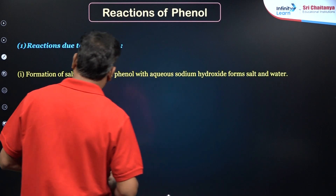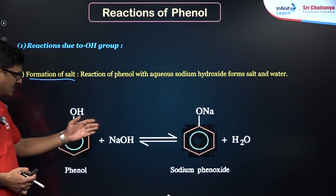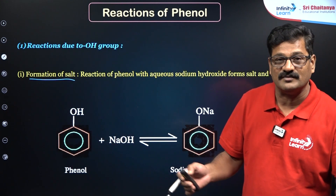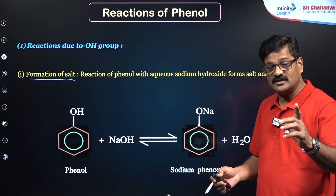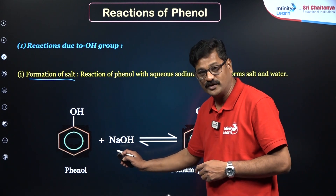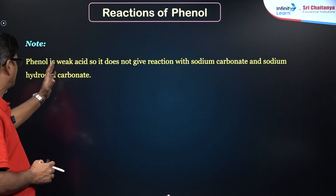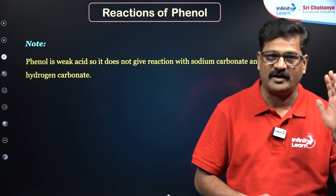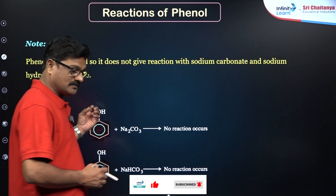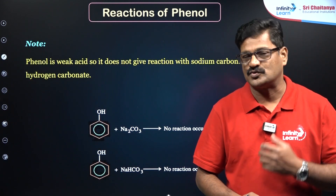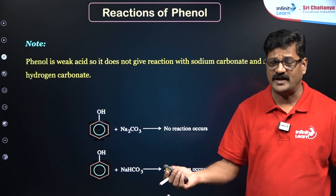Reactions due to the OH group come under the acidic nature of phenol. Phenol reacts with aqueous sodium hydroxide to form sodium phenoxide and water. It can also react with sodium metal to give sodium phenoxide and hydrogen gas. Importantly, phenol is a weak acid and does not react with sodium carbonate or sodium bicarbonate — this distinguishes it from carboxylic acids, which react with sodium carbonate or bicarbonate to liberate CO₂.